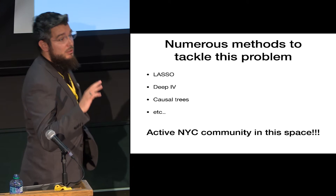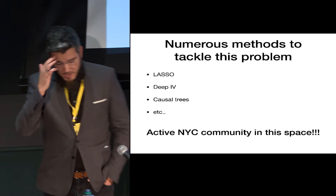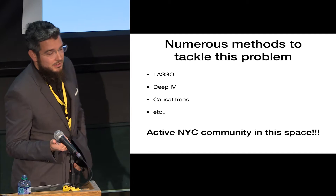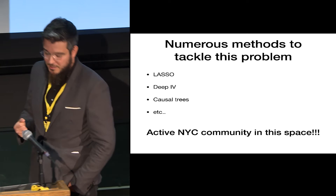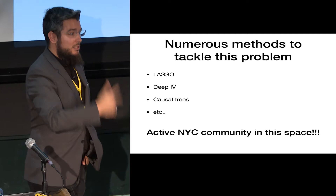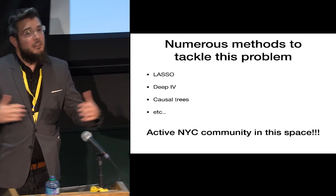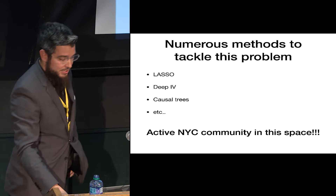There are many ways to find subpopulations in observational data: extended lasso approaches, deep instrumental variables, causal trees, causal forests. A lot of people in New York City are working on this problem — Adam here has a great package on causal inference on GitHub, David Bly at Columbia, Rajesh at NYU, John Lankford also in New York City. You could just hop on the subway and meet these experts in this emerging field.